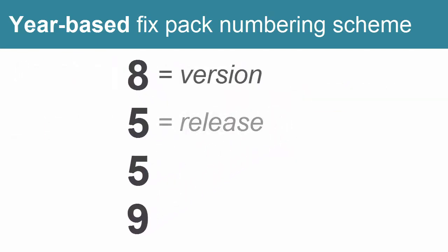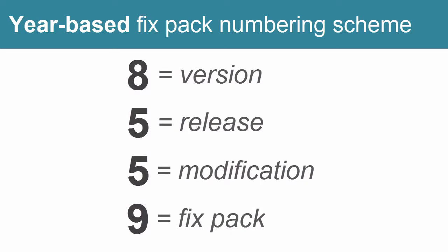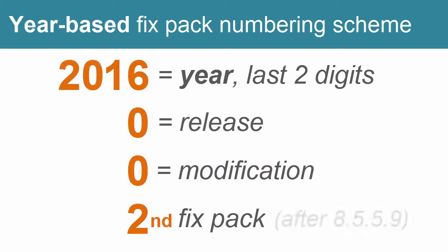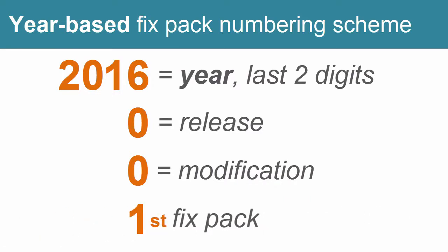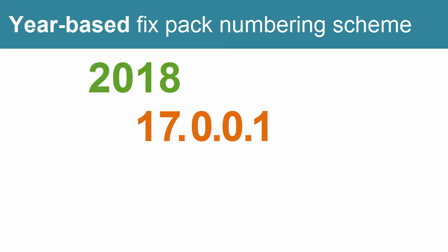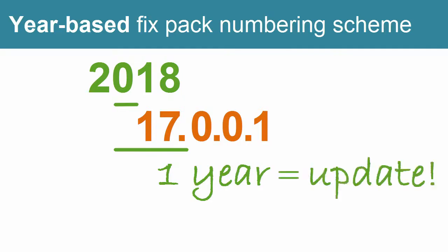Instead of the traditional version-release-modification FixPack numbering scheme such as 8559, Liberty FixPacks now begin with the year the FixPack is released. For example, 16002 refers to the second FixPack of 2016, the first being 8559, which was still on the old numbering scheme. The first FixPack of 2017 will be 17001. So in 2018 you can look at your 17001 installation and know that it's about a year old and it might be time to update.